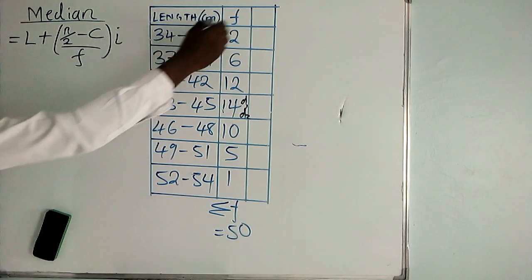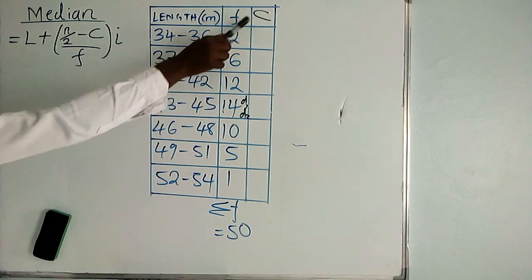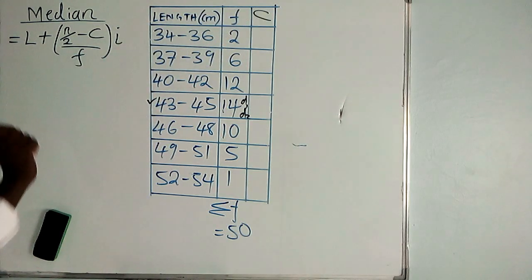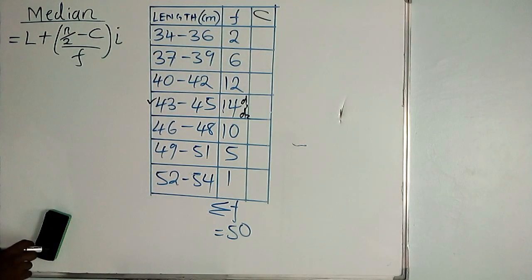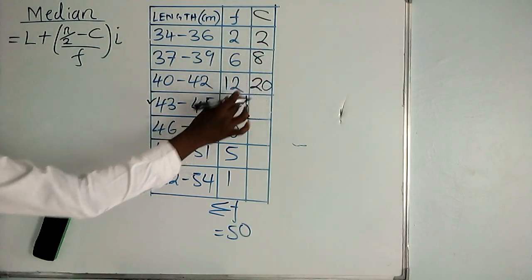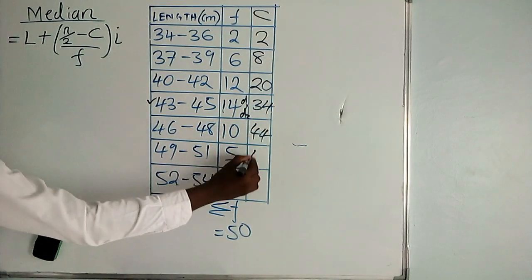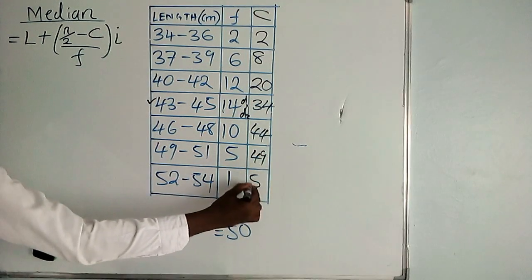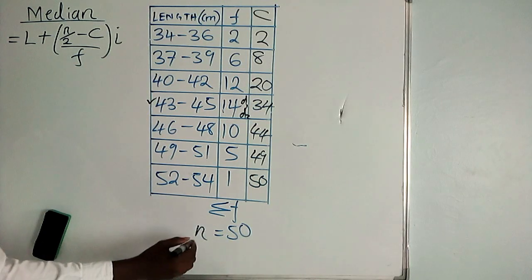Before identifying the median class, you must know which term is the median term, and the cumulative frequency column will identify that position for you. So you add a column of cumulative frequencies: 2, then 2 plus 6 equals 8, 8 plus 12 equals 20, 20 plus 14 equals 34, 34 plus 10 equals 44, 44 plus 5 equals 49, 49 plus 1 equals 50. Reaching 50 means the last term is the 50th term.